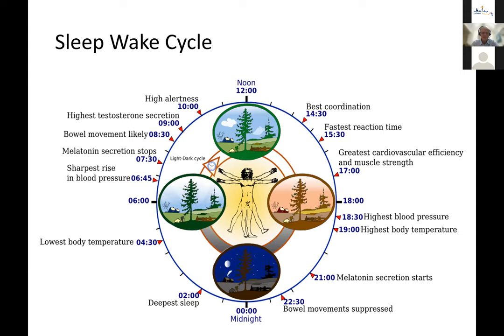This diagram shows the sleep-wake cycle. When you wake up in the morning, there's a sharp rise in blood pressure. Melatonin secretion stops around 7:30am. Bowel movement is likely in the morning, followed by a testosterone peak and high alertness by mid-morning. As the day progresses, temperature and blood pressure increase. Later on, melatonin secretion starts again, driving sleep onset. If this cycle is disrupted by light and dark changes, you can see how jet lag occurs.